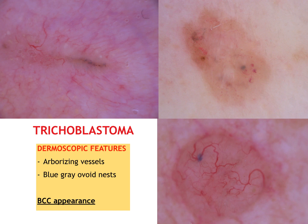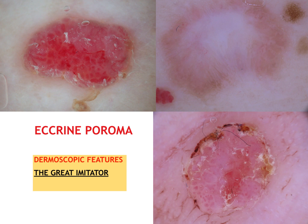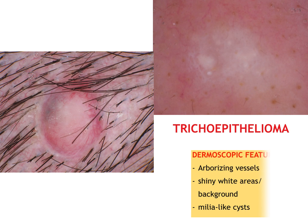As we know, trichoblastoma represents the good brother of basal cell carcinoma, often exhibiting arborizing vessels and blue-grey ovoid nests. Acrospiroma is a great imitator as it mimics many benign and malignant lesions — in one picture it's similar to an angioma, in another it looks like a dermatofibroma, and in the last one it resembles a viral wart. Trichoepithelioma is quite rare and sometimes seen in the context of syndromes such as Brooke-Spiegler. White color is relevant dermoscopically and can appear as shining white areas or background and milia-like cysts; arborizing vessels can also be found.